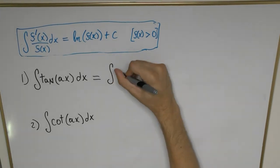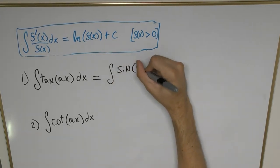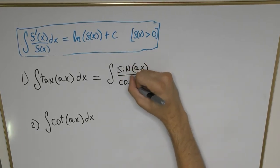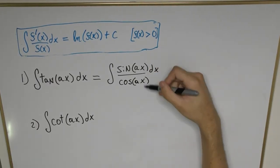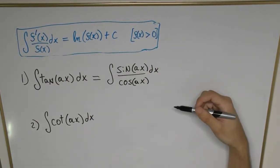more than the ratio of sine and cosine. We have sine of ax divided by cosine of ax dx, which is exactly the same as tangent. Now we've gone from a simple function like tangent to a rational function.